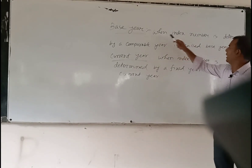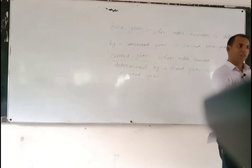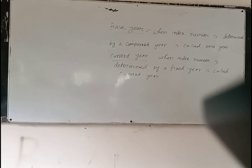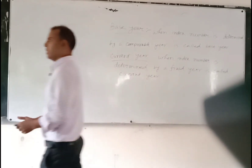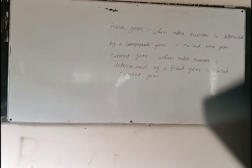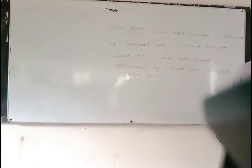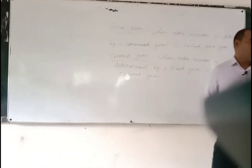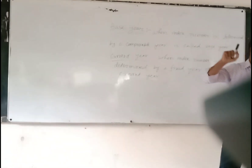When the index number is determined by a comparable year, it has no unit. The number of index number is determined by a fixed tier — a base year. If there is a fixed tier, the group used is determined by that fixed tier, and the current tier is the current year. In 2022 it is a base year, and in 2023 it is a current year.